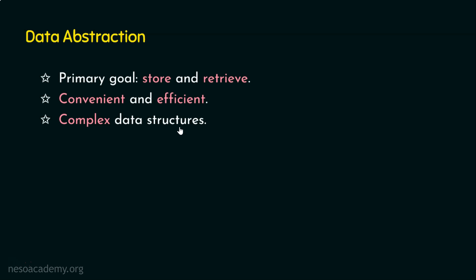Data abstraction means hiding the complexity. To understand this, let's take an analogy. Assume we have subscribed to a milk vendor and every day we are getting milk packets delivered to our home. Let's imagine there is some delay in delivery for a particular day. We enquire the milk delivery agent regarding the delay. The reply from the agent would be the reason for the delay — say, his alarm was not working and he was not able to wake up on time. That would be sufficient for us.